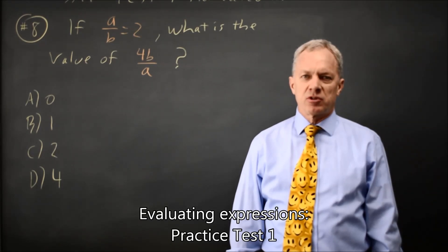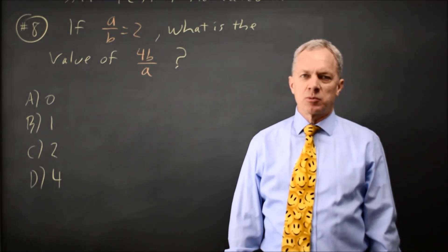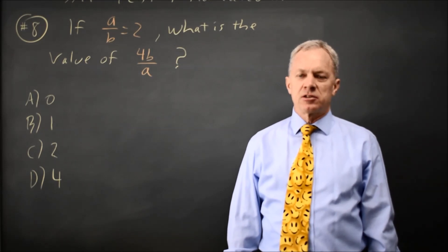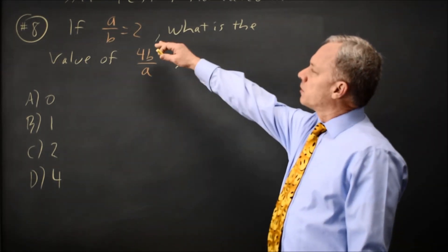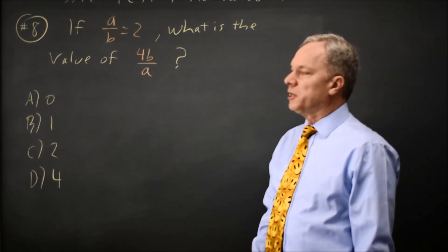This is non-calculated question number eight from SAT test one. College Board gives you an expression and asks you to evaluate a different expression. Where A over B equals two, what is four B over A?